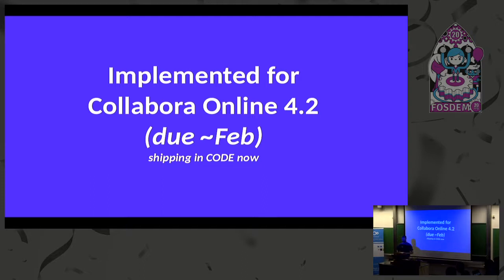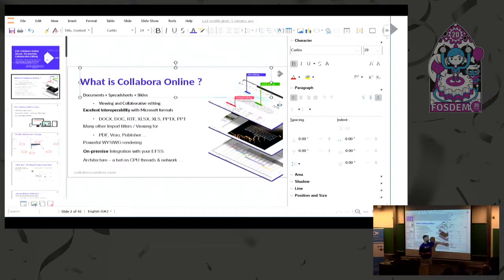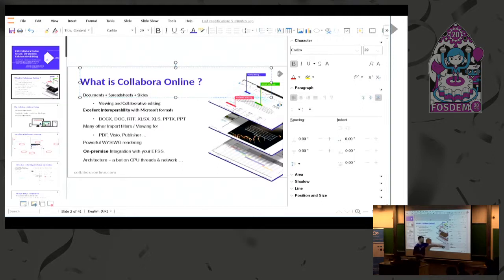Collabora Online 2 - these are basically new features we've added in the last six to nine months or so. We've got the sidebars now in Impress - this is being tunneled through from the PC application. We're moving these to use some native widgets probably in the next year or so. But it works really nicely for now - you have quite rich functionality, all of these different panels. You can be fiddling with a shadow of your text box and so on - a huge wealth of functionality.